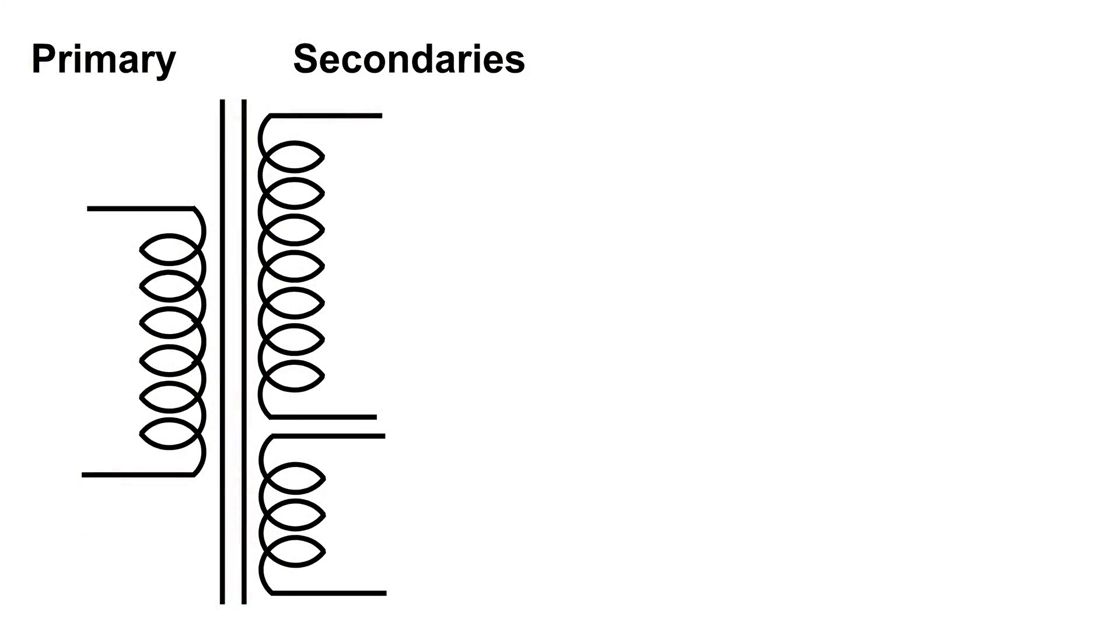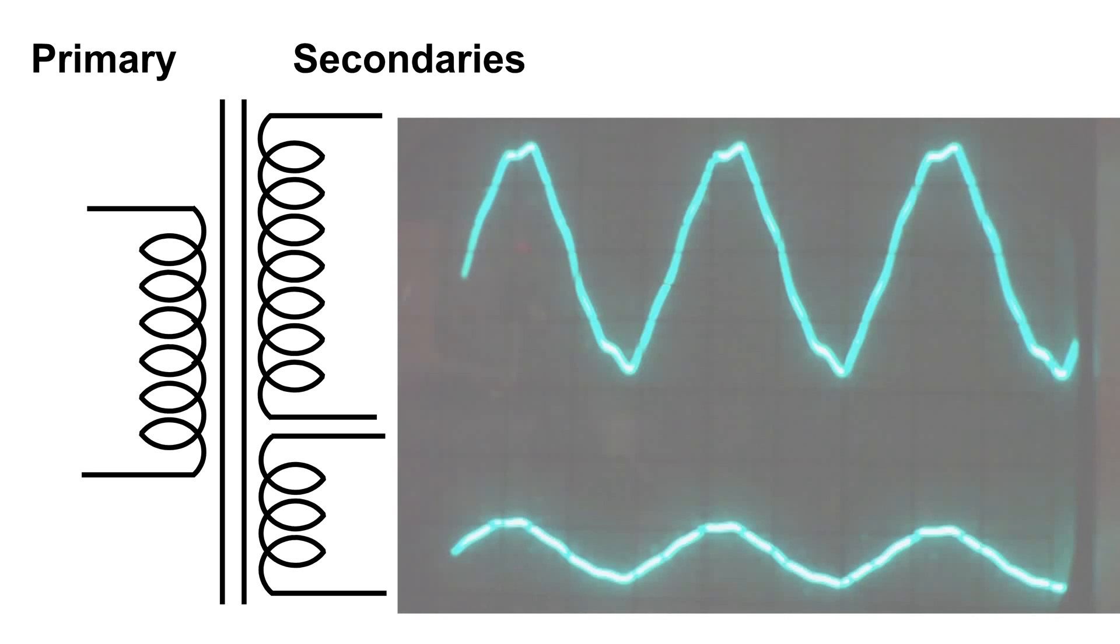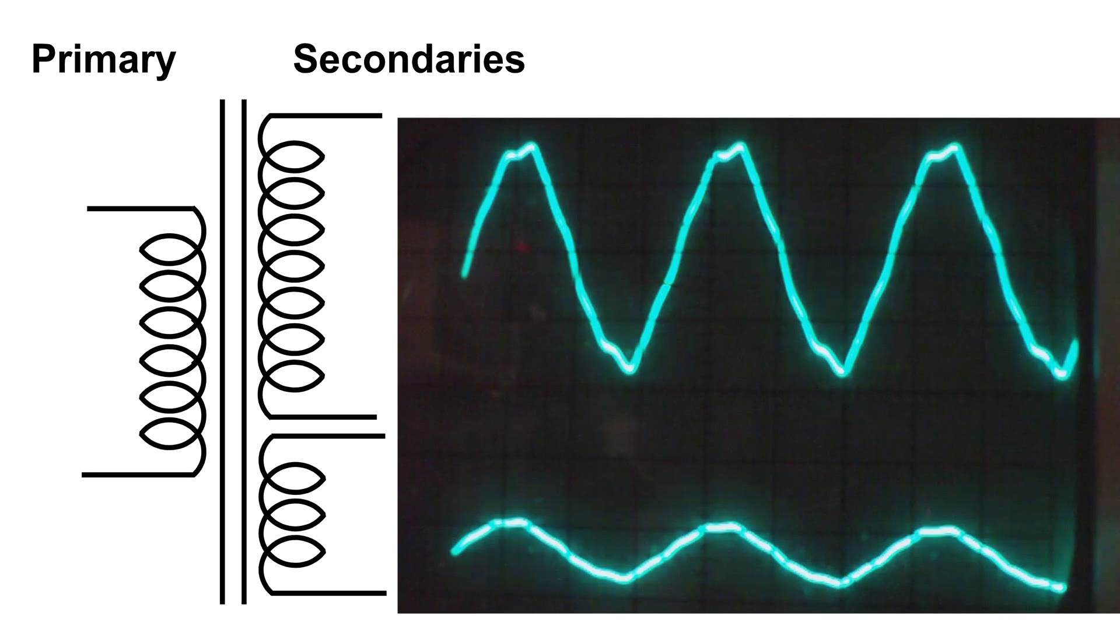Here's the diagram again for this transformer. And I put the secondaries on the scope. The top one is the secondary with the most wire, and the bottom one is the secondary with the least wire.